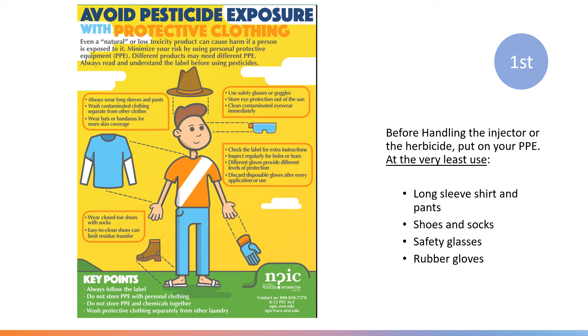First, wear your personal protective equipment anytime you handle the injector, its components, or the herbicide. The herbicide label on the bottle will specify required PPE to be used with the herbicide. However, PPE also helps protect you from other risks, the injector and its sharp needle, and the knotweed plants themselves.